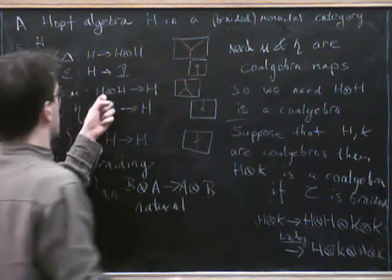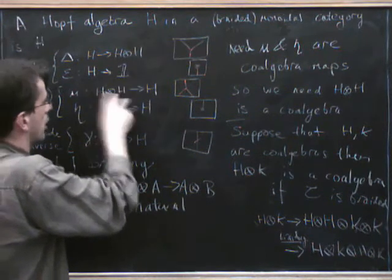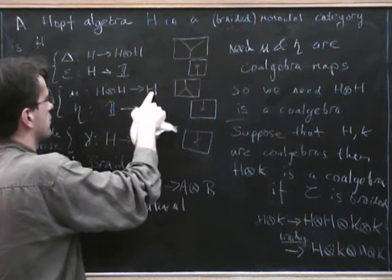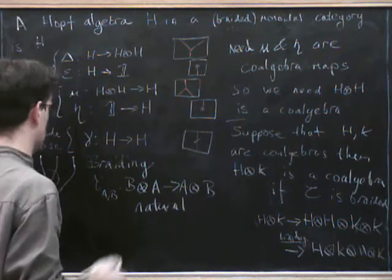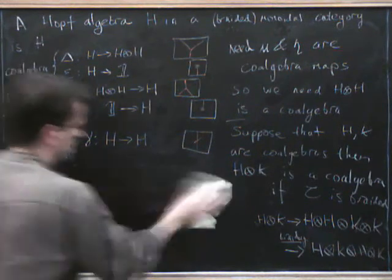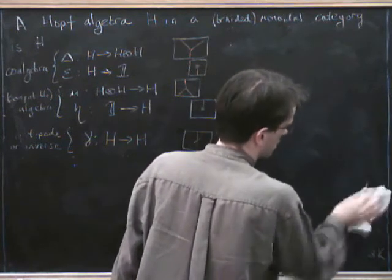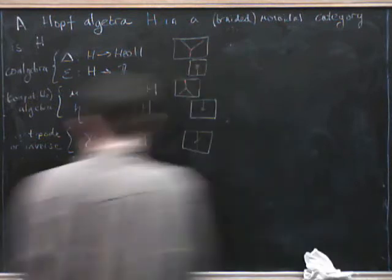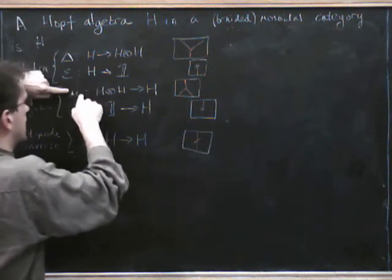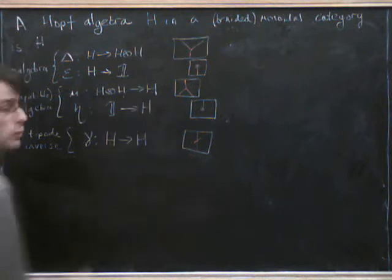So if we do delta on that, and then mu, or we do mu on that and then delta, sorry, the other way around. Delta on that, then mu, or mu on that and then delta, we should get the same thing. So I can now write this down.